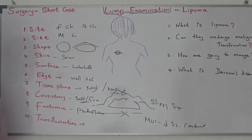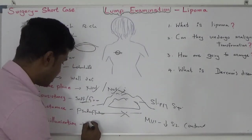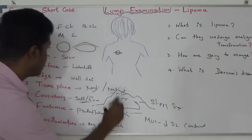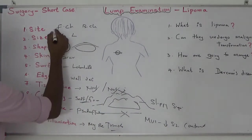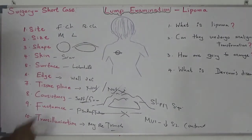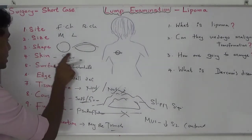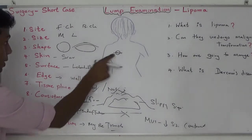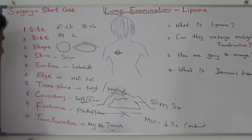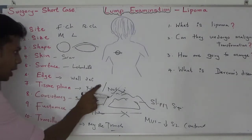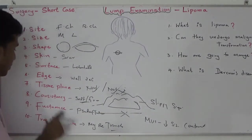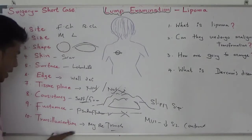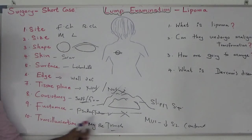Transillumination: Sometimes lipoma can be transilluminant. Summary of lipoma features: site — front or back of the chest; size — medium to large; shape — hemispherical or oval; there may be a scar indicating recurrence; surface — lobulated; edges — well-defined; tissue plane — not attached to skin or muscles; consistency — soft to firm; pseudofluctuant; and it may be transilluminant.